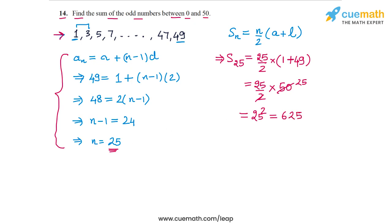So the sum of the odd numbers, sum of all the odd numbers between 0 and 50, is 625. That's our answer.